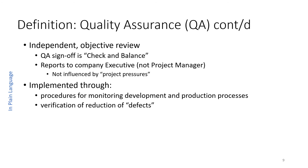The quality assurance process should typically be implemented as an independent objective review. The quality assurance process reports to the executive of the company, not to the project manager. Projects are under strong pressures to get things done quickly, make schedule, and stay under budget — and quality assurance can work against those pressures. So quality assurance typically reports to executive management, providing checks and balances for the whole enterprise.